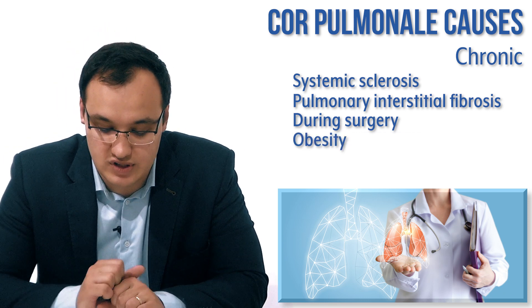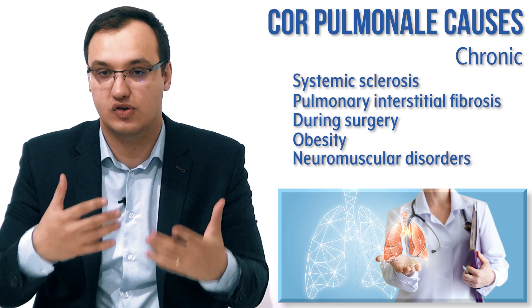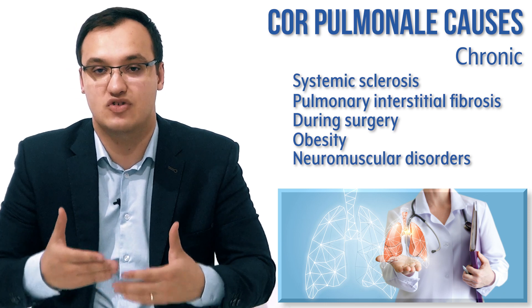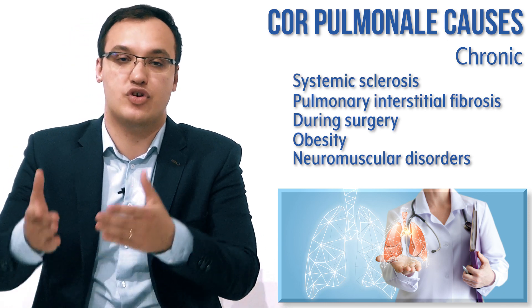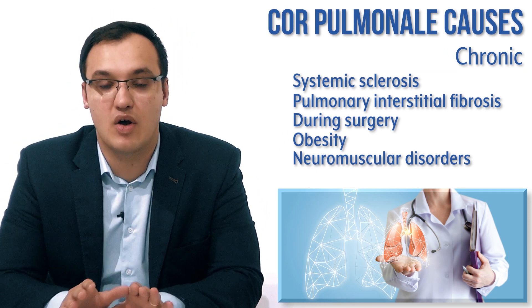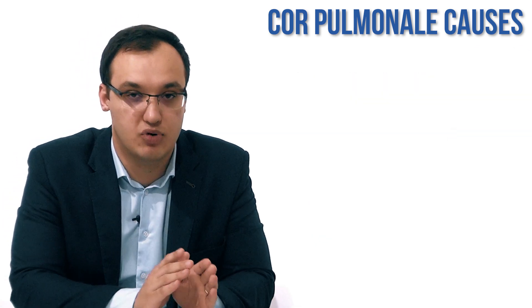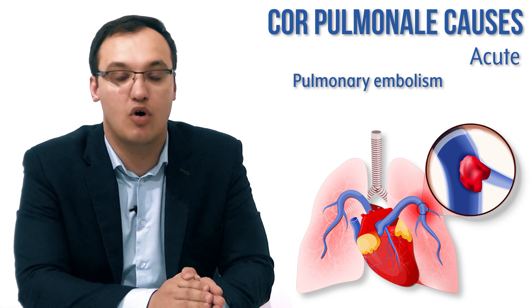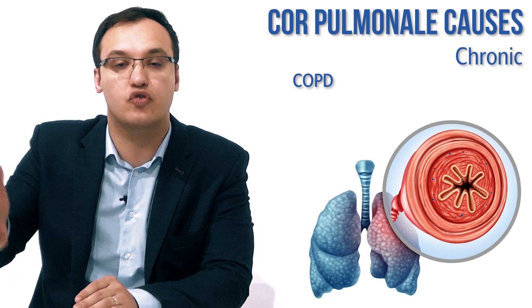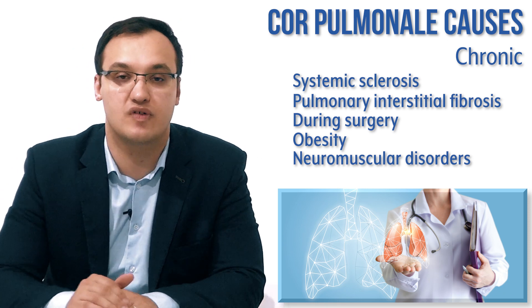Obesity can also cause cor pulmonale, as can neuromuscular disorders affecting the respiratory muscles — if the patient cannot breathe normally due to these disorders, high pressure builds up and you get cor pulmonale. Worth mentioning for chronic causes are also systemic sclerosis — an autoimmune disease causing lung fibrosis and pulmonary hypertension — and pulmonary interstitial fibrosis.